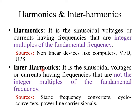Interharmonics are the vice versa of harmonics — those not captured under harmonics are called interharmonics. They are defined as currents or voltages whose frequencies are not integral multiples of the fundamental frequency. Sources of interharmonics include static frequency converters, cycloconverters, and power line carrier signals.